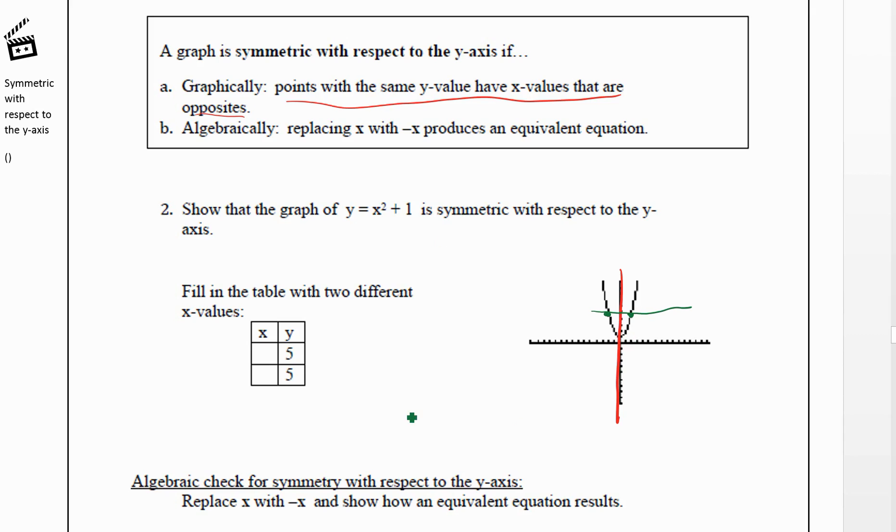If we have y equals x squared plus one, well, if we plugged in five for y and solve for x, the first thing we would do would be subtract one from both sides. So we'd have 4 equals x squared.